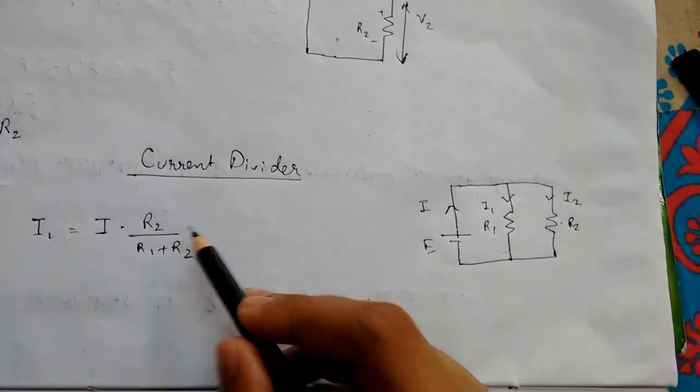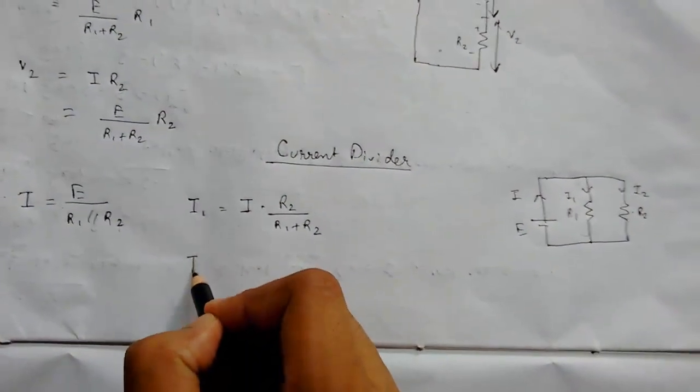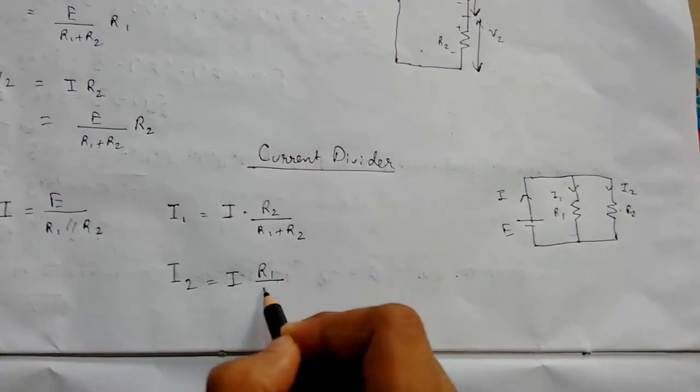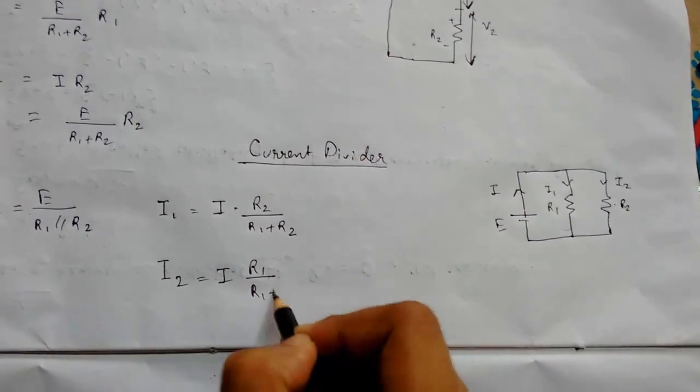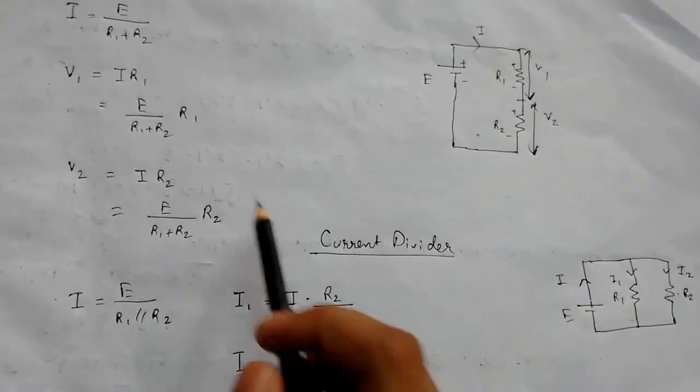So this will be R2. R2 will come here and sum of all parallel resistances. Now for I2, it will be the same, just opposite. I times R1 upon R1 plus R2. So this is our current divider rule and this was our voltage divider rule.